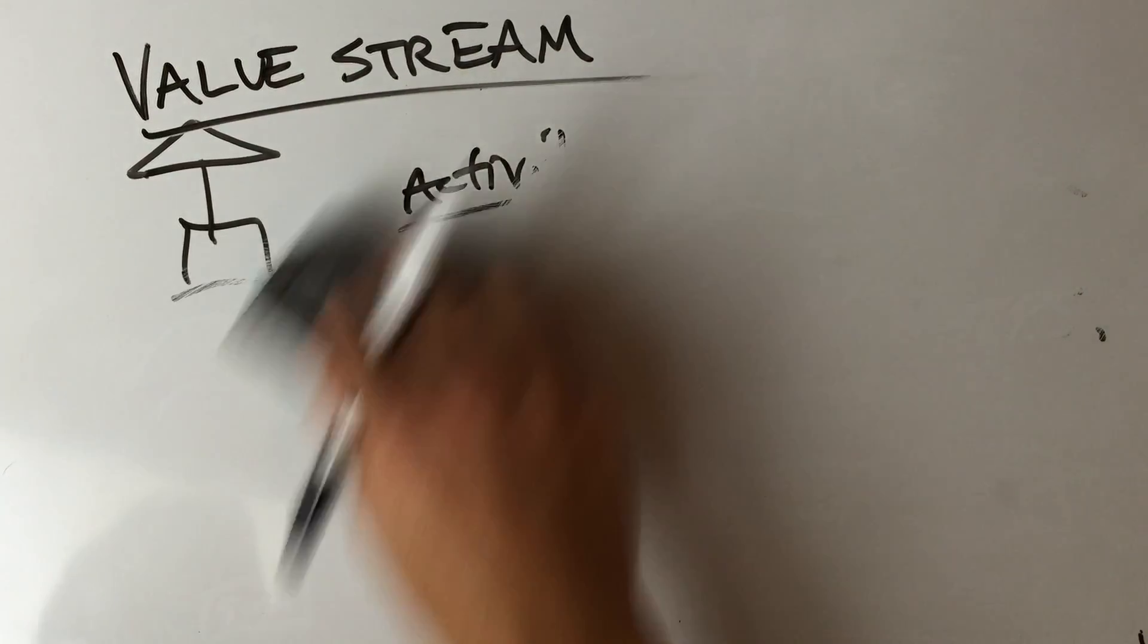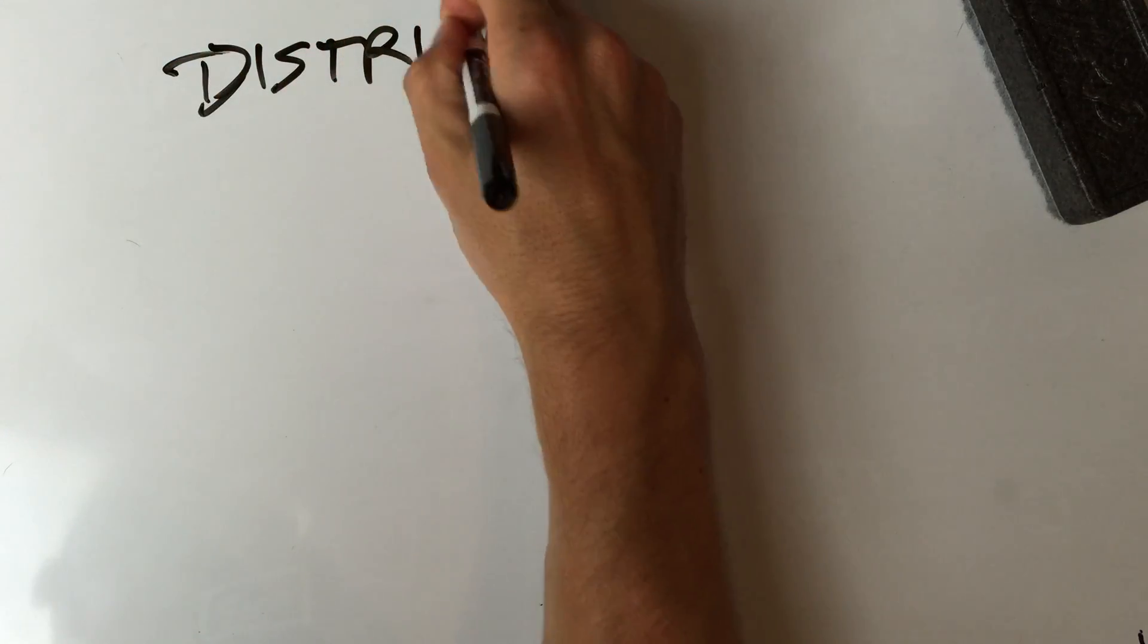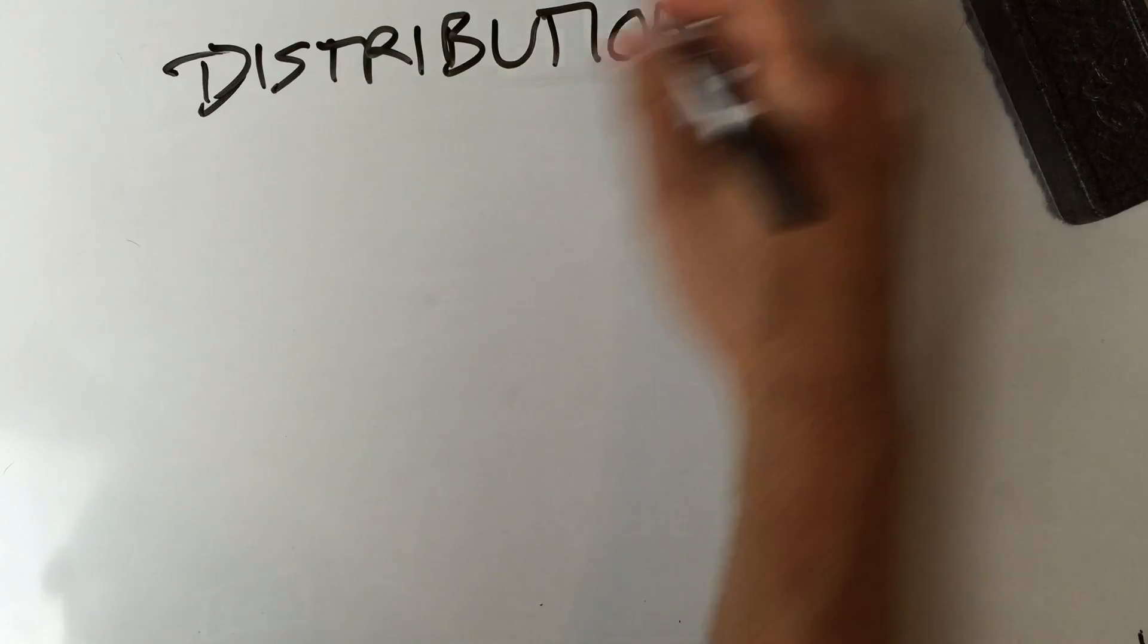Okay, after value stream is a chapter called distribution channel.